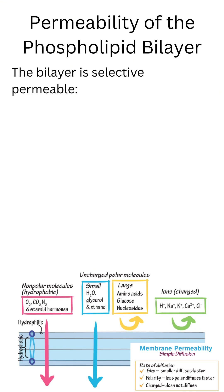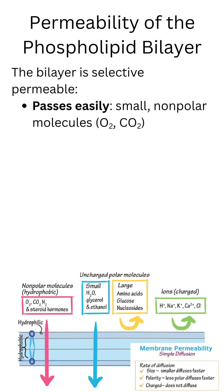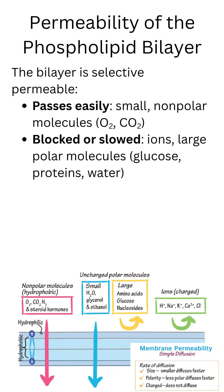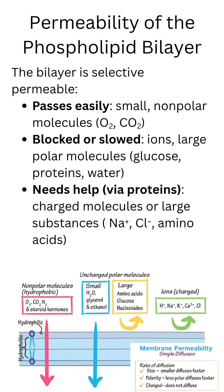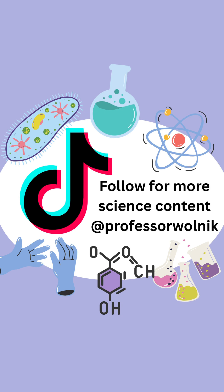Finally, a quick note on permeability. Small, non-polar molecules like oxygen gas can easily diffuse through the membrane. On the other hand, large, polar, or charged molecules will either slow down or be blocked — they'll usually need the help of transport proteins or channels to enter or exit the cell. And that is the intro to our phospholipid bilayer.